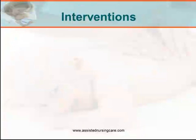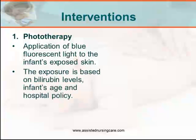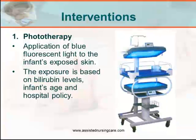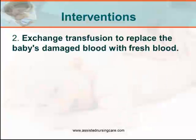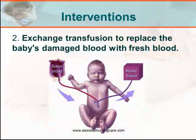What are the interventions for hyperbilirubinemia? The first is phototherapy — the application of blue fluorescent light to the infant's exposed skin. The exposure is based on bilirubin levels and may be given as single or double phototherapy according to the infant's age and hospital policy. The second intervention is exchange blood transfusion, to replace the baby's damaged blood with fresh blood.